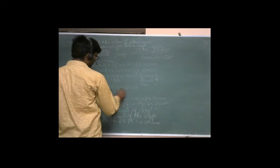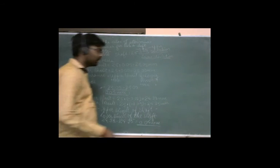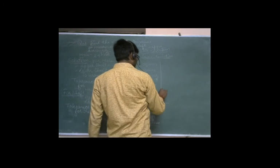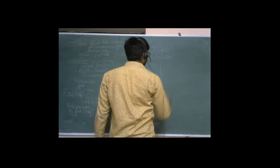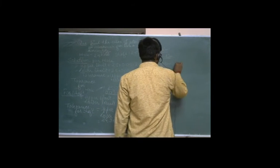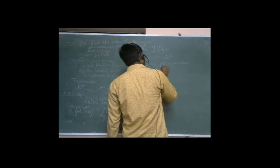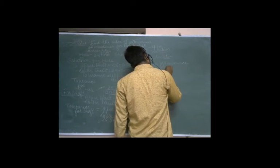You can see this is the hole tolerance: 0.05. This is the shaft tolerance: 0.04. Tolerance can be different. Now we are talking about allowances — allowances, which is basically minimum clearance.